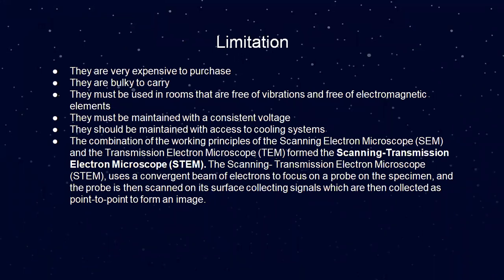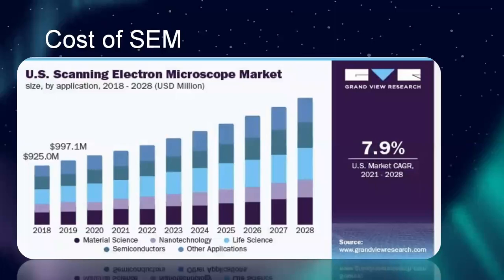Limitations of the scanning electron microscope: they are very expensive to purchase. They are bulky to carry. They must be used in rooms that are free of vibration and free of electromagnetic elements. They must be maintained with a consistent voltage. They should be maintained with access to cooling systems. And lastly, the combination of the working principles of the scanning electron microscope and the transmission electron microscope forms the scanning transmission electron microscope, which uses a convergent beam of electrons focused as a probe on the specimen; the probe is scanned on its surface collecting signals which are collected as point-to-point format images. The cost of the scanning electron microscope has been tracked from 2018 through 2023 and onwards.